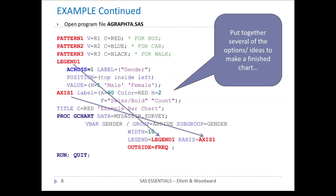Let's continue with this example by opening up the program file agraph7a. This adds some additional code. First, we see the legend1 code where we're defining a legend that's going to appear at the top inside left of the graph. We're also defining axis1 to define the vertical axis. These are applied in PROC GCHART where legend equals legend1, and the R axis uses axis1. We're also defining outside equal freak, which tells SAS to put the frequencies for each bar outside the bar.